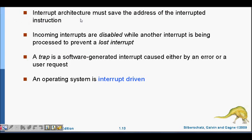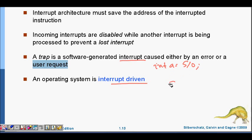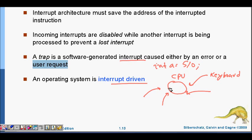A trap is a software-generated interrupt caused by either an error or a user request. For example, if you write bad code like dividing by zero — `int a = 5 / 0` — that generates a division-by-zero error, which is a trap-type software-generated interrupt. The operating system is basically interrupt-driven — the CPU is getting a lot of interrupts and handling all of them. For example, pressing a keyboard key generates an interrupt, and then the CPU will interrupt the monitor to display whatever was typed.